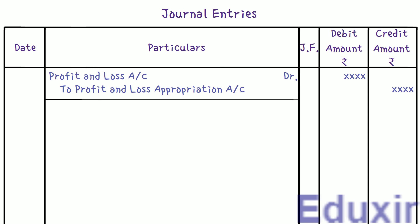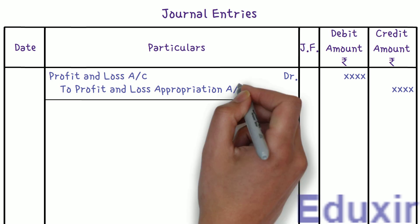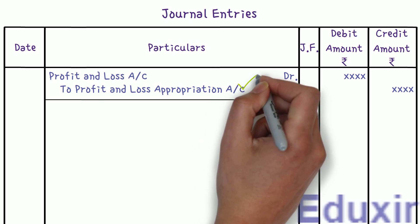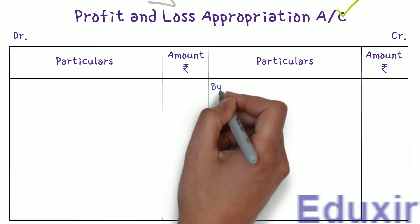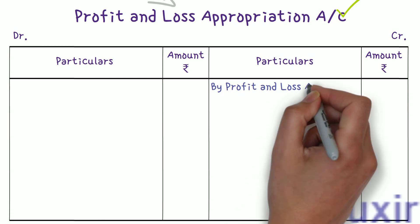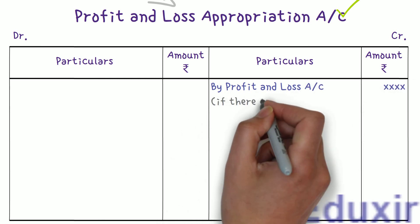The scope of this discussion is the posting of entries to the profit and loss appropriation account, so we will only discuss entries related to it. This journal entry needs to be posted on the credit side of the profit and loss appropriation account, with 'profit and loss account' written in the particulars column — as this is a case where there is a profit.